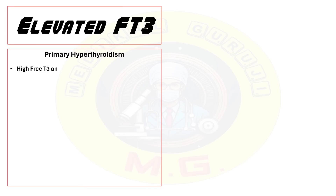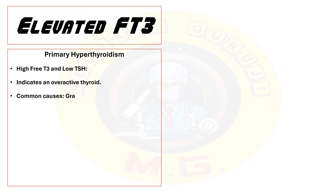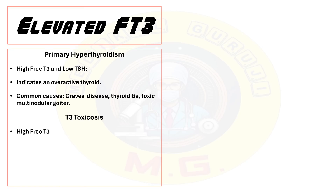High free T3 levels are found in primary hyperthyroidism, where there is elevated T3 and low TSH, indicating an overactive thyroid. Common causes include Graves' disease, thyroiditis, and multinodular goiter.